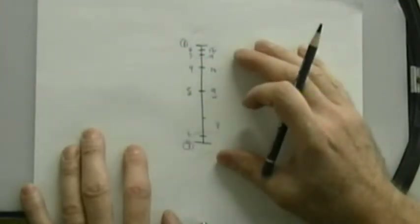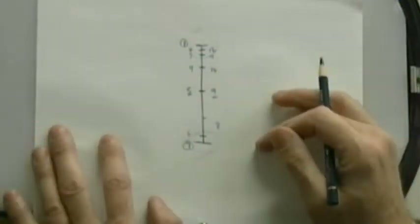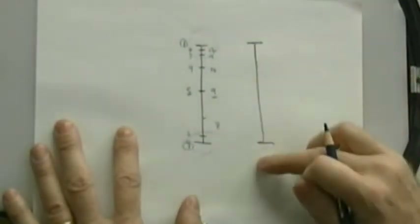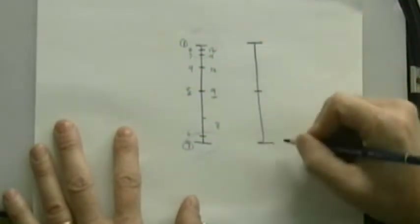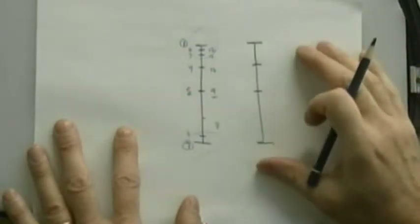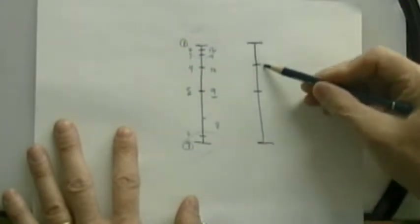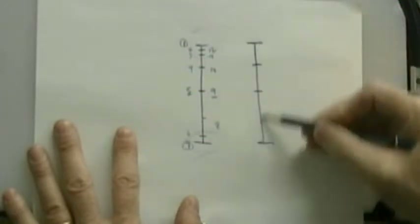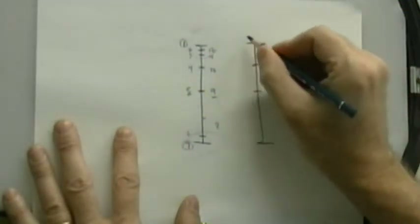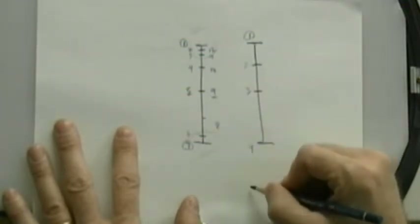This is essentially what we want to do in our run cycle as well, but we want to modify the timing so that we're working on an eight-drawing cycle. Using the same basic idea, we have a timing chart with a high point and a low point, and we want to have a halfway position with a slow-in up at the top. So our drawings: drawing number one is the high point, two, three, and four is the low point down here.